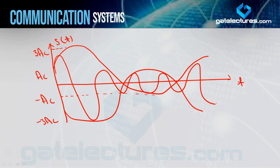So this is under modulation, critical modulation, and over modulation. I hope this video is clear. If you have any doubt, you can post in the comment section. In the next video, I will start with the generation of amplitude modulation. Goodbye.